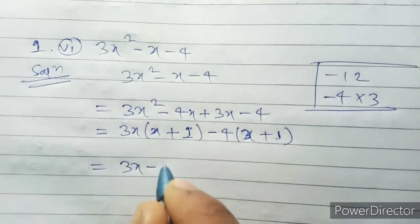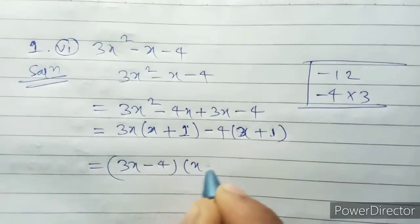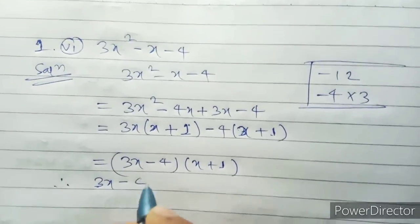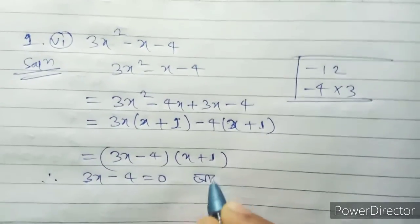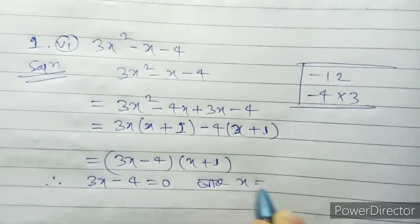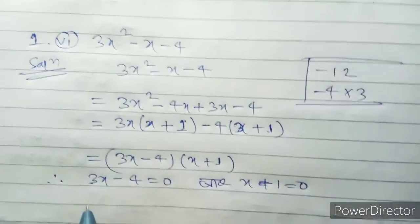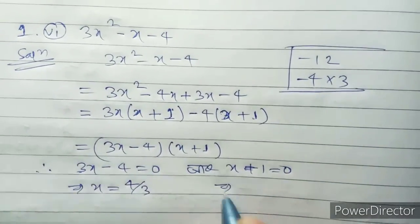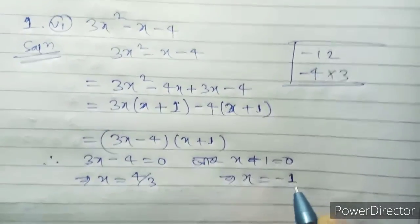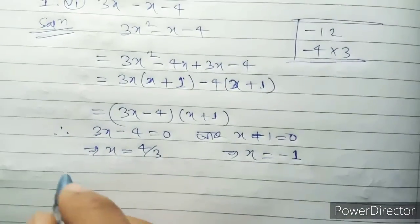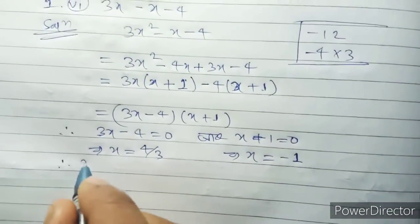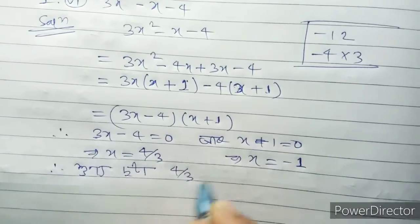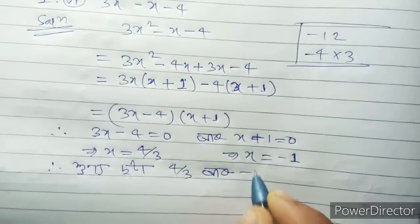So 3x minus 4 equal zero, or x plus 1 equal zero, gives x equal 4 by 3 and x equal minus 1. The zeros are 4 by 3 and minus 1.